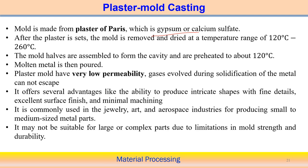Unlike sand mold casting where permeability is higher, plaster has very low permeability — this is a problem with plaster mold casting. Gases that evolve during solidification cannot escape easily. We have to design the casting operation properly to avoid this difficulty. On the other side, very intricate and complex shapes with very fine details can be produced, and surface finish is also very good, requiring minimum machining.